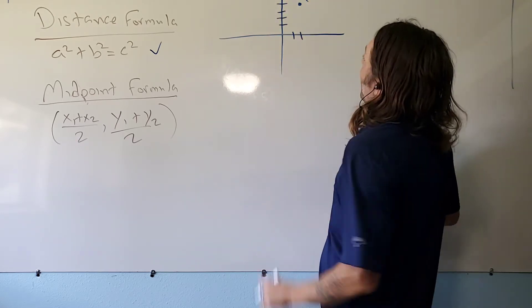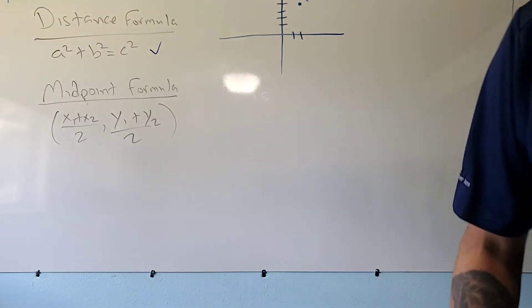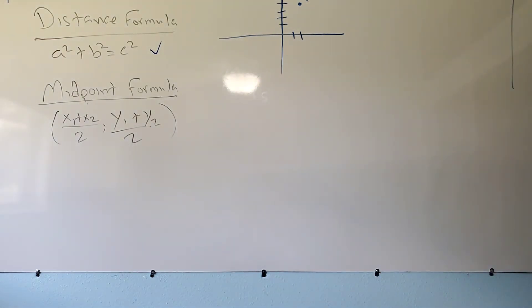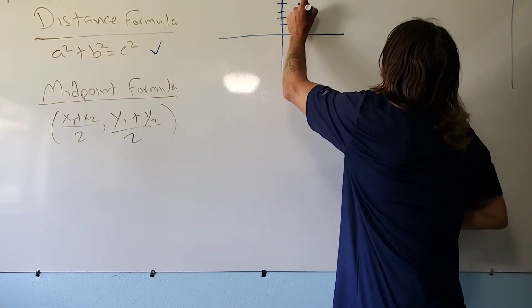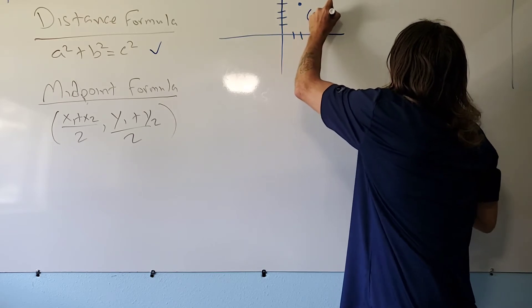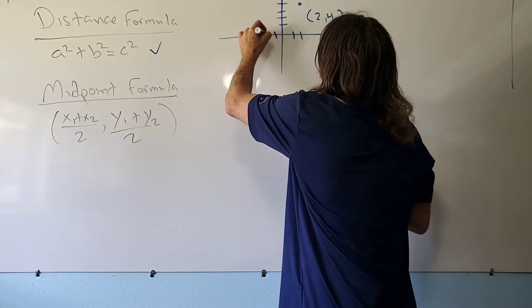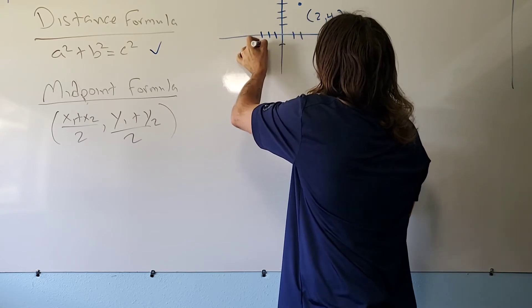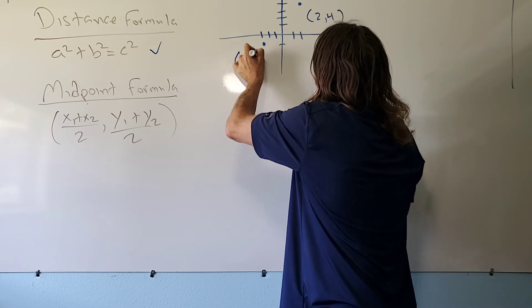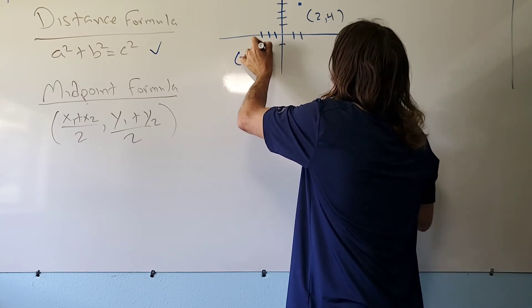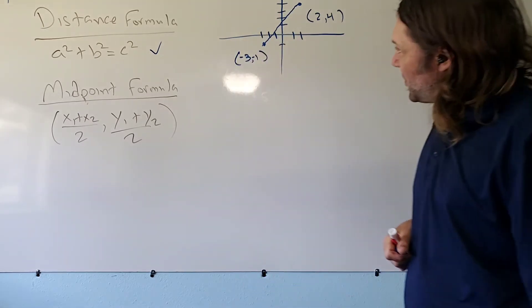So I will pick just nice simple coordinates here, so this is at two, four. I hope that that's not too high on the graph. The ordered pair is too high, so I'll write that lower. So this ordered pair is two, four, and we'll do another ordered pair over here at negative three, negative one.